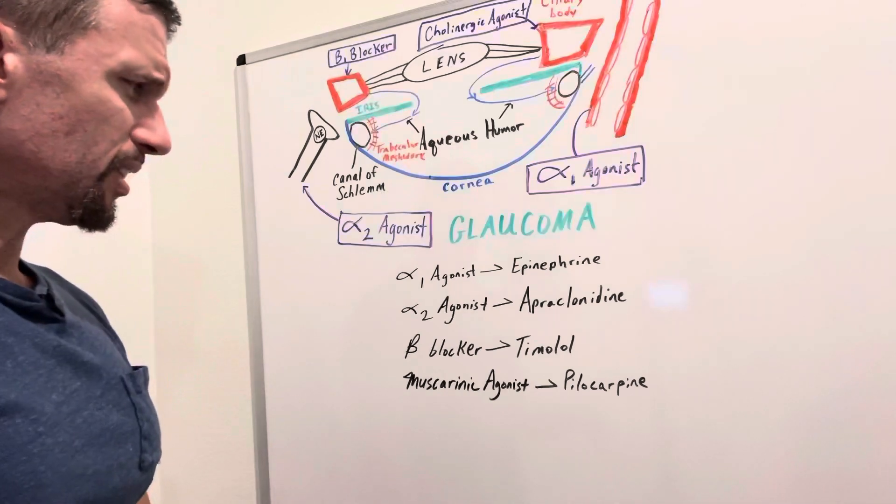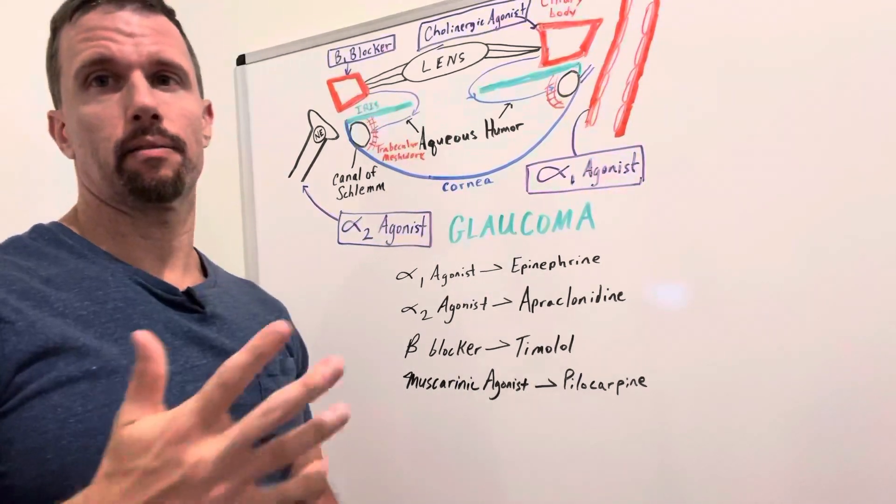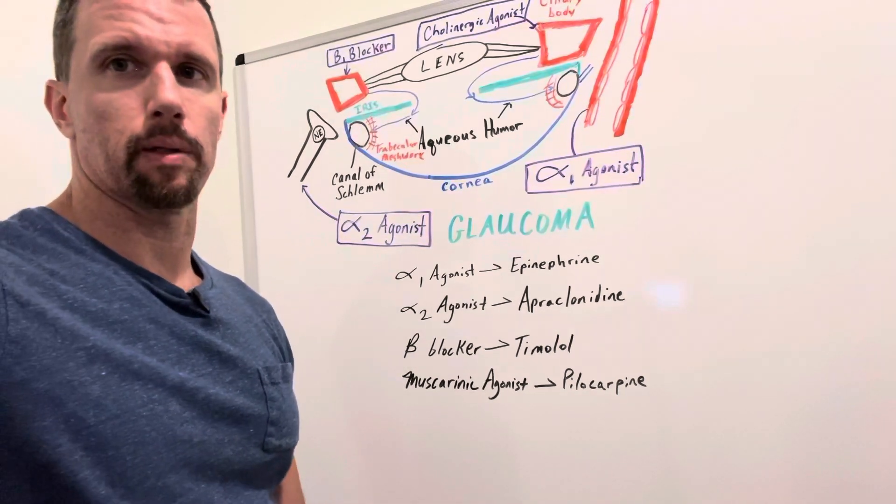So you can see four different ways that autonomic pharmacology comes into the treatment of glaucoma.